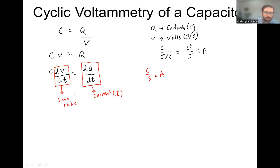Standard units here would be volts per second. So you end up with a very nice equation, which says that your current I of your cyclic voltammogram is going to be equal to some constant, the capacitance of your capacitor, times the scan rate.